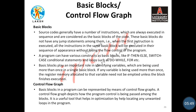The next topic is basic blocks and control flow graph. Basic block means our source code generally has a number of instructions which are always executed in sequence and are considered as the basic block of the code. These basic blocks do not have any jump statement among them. When the first instruction is executed, all instructions in the same block will be executed in their sequence without losing the flow control of the program. A program can have various constructs as basic blocks like if-then-else, switch-case, conditional statements, loops, etc.